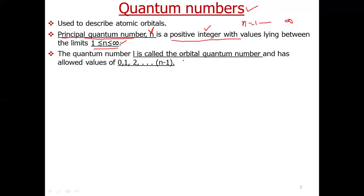The next quantum number is called the orbital quantum number, denoted by symbol small l. The value of l depends upon the value of n. For a given value of n, l can have values starting from 0, adding 1, and going up to n−1.